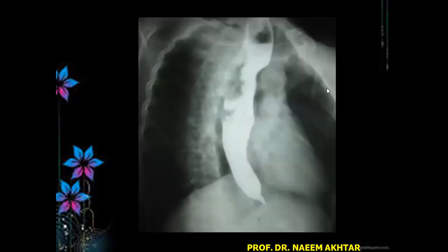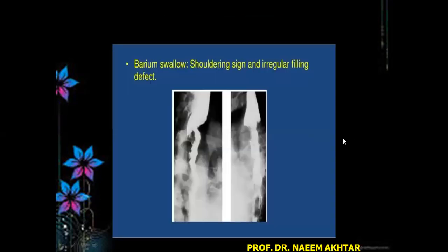This is the X-ray barium swallow right lateral view, which is showing the filling defect with irregular margin of the esophagus. This is again X-ray barium swallow showing the shoulder sign and irregular filling defect.